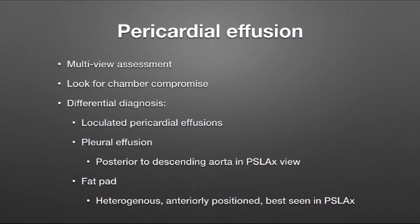To assess pericardial effusion, we need to look at it in multiple views, because we are dealing with a complex three-dimensional structure which we are imaging with a two-dimensional imaging tool. We need to assess for chamber compromise, because this is the underlying physiological principle of tamponade — where the pressure in the pericardial space becomes greater than in the chambers of the heart, causing collapse of the free wall, impaired filling, and ultimately a significant decrease in cardiac output, which can be fatal.